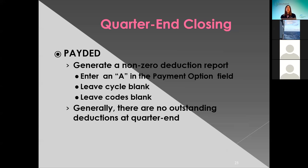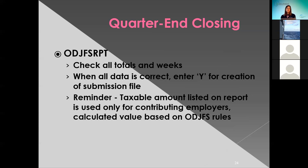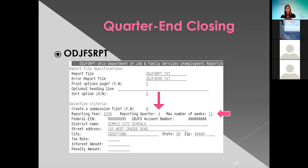They're going to want to run paid deduction paid debt. This generates a non-zero deduction report, so they're going to want to use option A in the payment option field and leave the cycle and the codes blank. Most of the time your deductors should not have any outstanding deductions to carry over, but if they do, they just want to look into why they're still showing. They're going to want to run their ODGFS report at this time, check all their totals and weeks for the employees to make sure they're correct. Once the data is correct, they can run the ODGFS report again saying yes to create the submission file. The taxable amount listed on the report is used only for contributing employers. When running the ODGFS report, they need to enter in their reporting quarter and make sure it says four, and the number of maximum weeks needs to be entered.